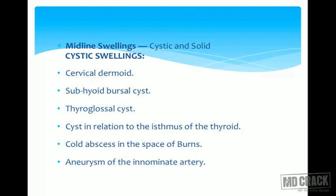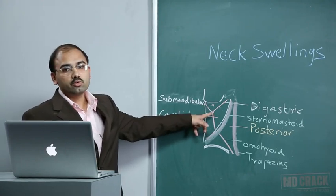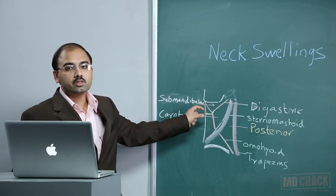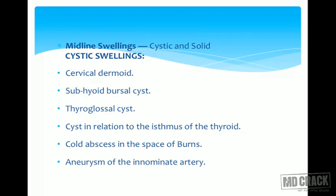We have midline swellings which are cystic and solid. The cystic midline swellings include cervical dermoid, subhyoid bursal cyst — the hyoid bone to which muscles are attached — giving rise to a cyst in the subhyoid region. Next is thyroglossal cyst, then a cyst in relation to the isthmus of the thyroid gland, and a cold abscess in the suprasternal space of Burns.